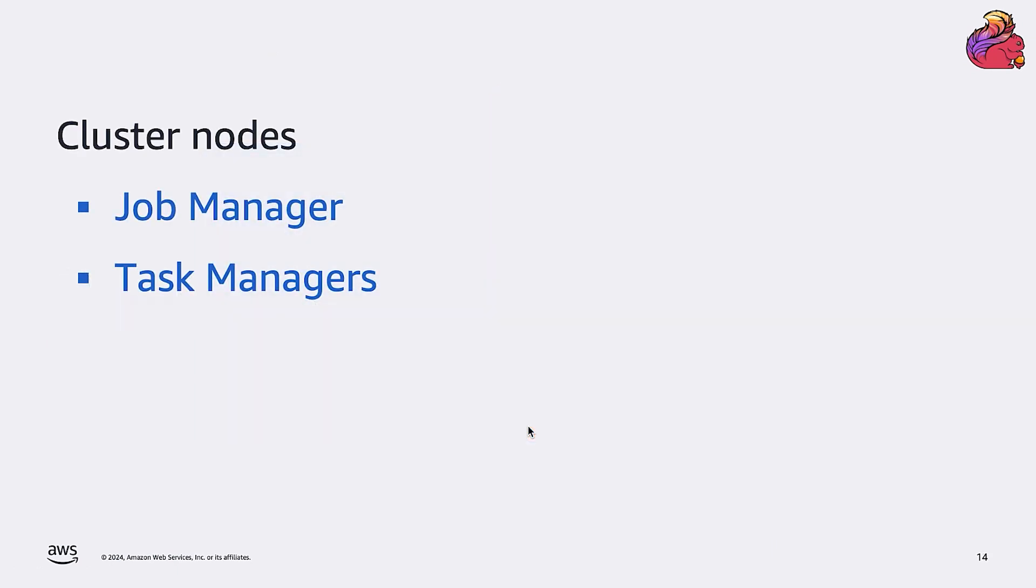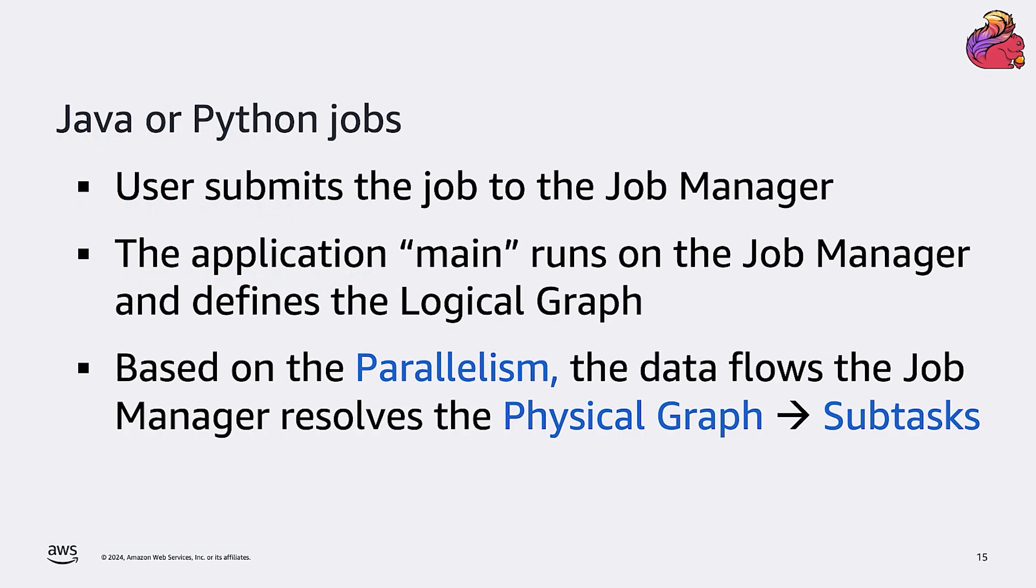Let's review the concepts and terminology that we have introduced so far. A Flink cluster is composed of two types of nodes. You have a job manager, used for orchestration and coordination, and a number of task managers that are actually doing the data processing when the application is running. When you start a Java or Python application, you submit the code to the job manager. The code in the main method runs on the job manager and defines the logical graph. Along with the application code, you also submit the application configuration, and in particular, the parallelism. And based on the parallelism, the job manager resolves the physical graph and creates the subtasks.